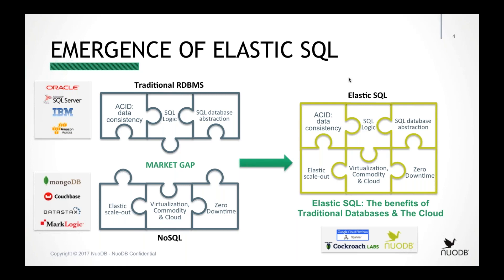As companies increasingly deploy applications on the cloud, a new form of database emerged — the NoSQL database — providing strong scale-out capabilities, the ability to run across virtualized and commodity environments, and better reliability without the scale-up architecture limitations of traditional databases. Elastic SQL brings the benefits of both by marrying strong data consistency and a SQL interface with elastic scale-out. Multiple companies are solving this same general need, including Google Cloud Spanner and CockroachDB, both of which came out of beta this year.